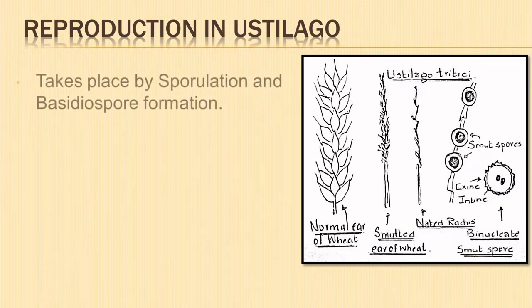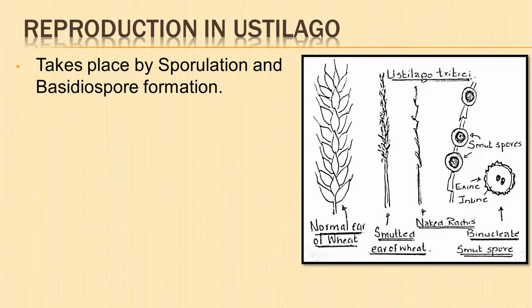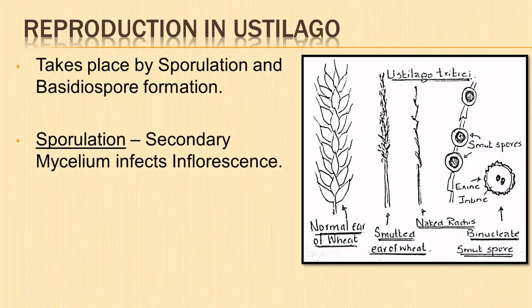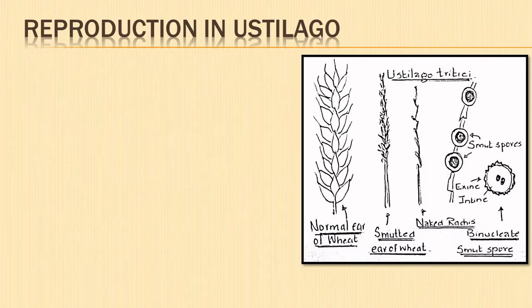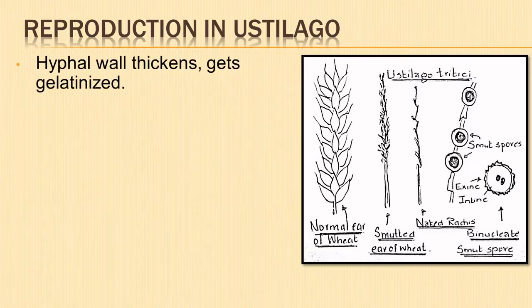Next we shall understand the process of reproduction in Eustilago. It takes place by sporulation and basidial spore formation. In sporulation, at the flowering time of the host, the secondary mycelium becomes active, branches profusely, and infects the embryonic spikelets or inflorescence. The parenchymatous tissue in the embryonic spikelets is destroyed completely.